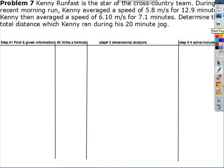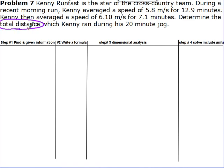Moving on to question 7. The ones in between are similar to what we've done — you'll complete 4, 5, and 6 on your own. Question 7: Kenny runs fast, star of the cross country team. During a recent race, Kenny averaged 5.8 meters per second for 12 minutes, then 6.1 meters per second for 7 minutes. Determine the total distance Kenny ran. They want total distance, so we'll have multiple distances to add together.